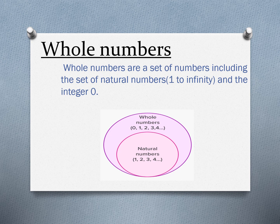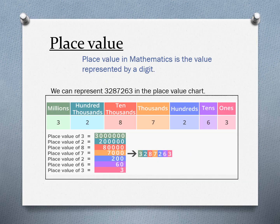Place value — in mathematics, the value represented by a digit is called its place value. Place value is known as positional notation; it shows the position of the digit. Here we can represent three million, two hundred and eighty-seven thousand, two hundred and sixty-three in the place value chart, starting from the left side.